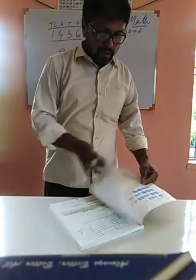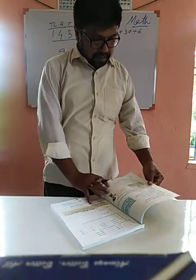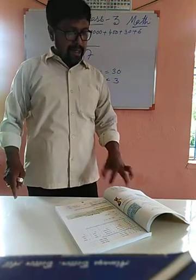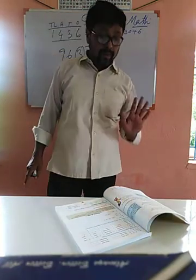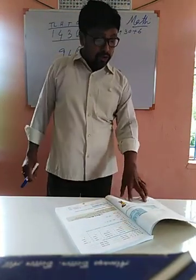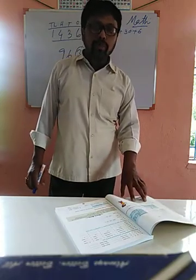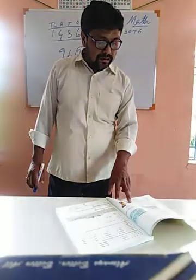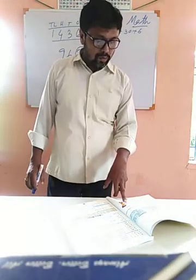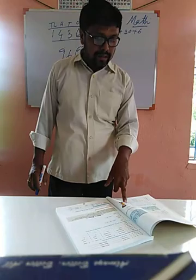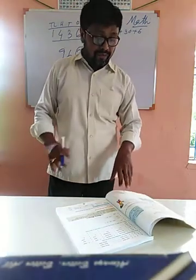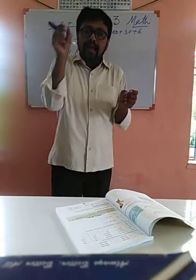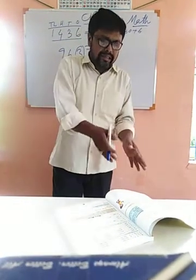Now go to page number forty, Exercise 1.2: write the place value of the underlined digits. For six one two three, what is the place value of two? It is twenty. And for three zero eight nine, what is the place value of eight? It is eighty. But what is the face value? The face value is just the digit itself — either eight or nine, whatever is written there.